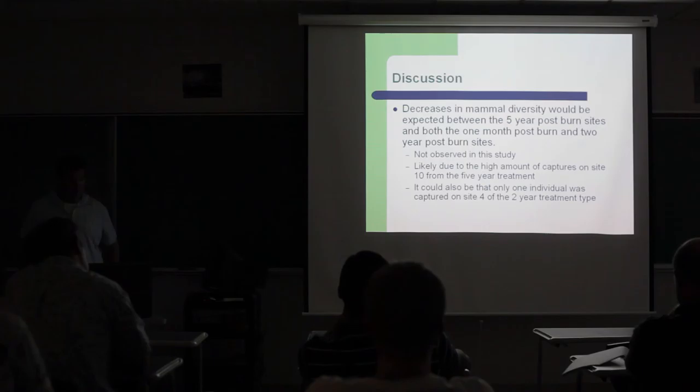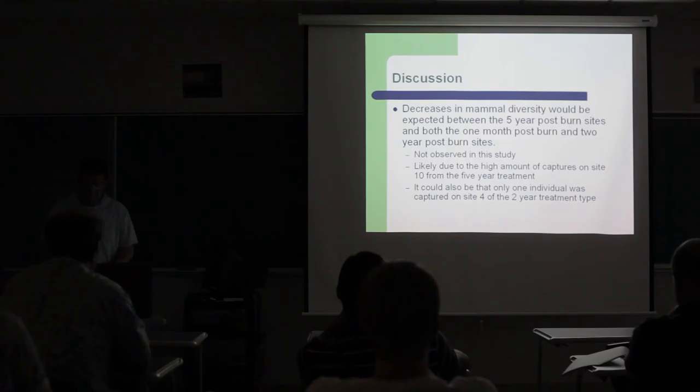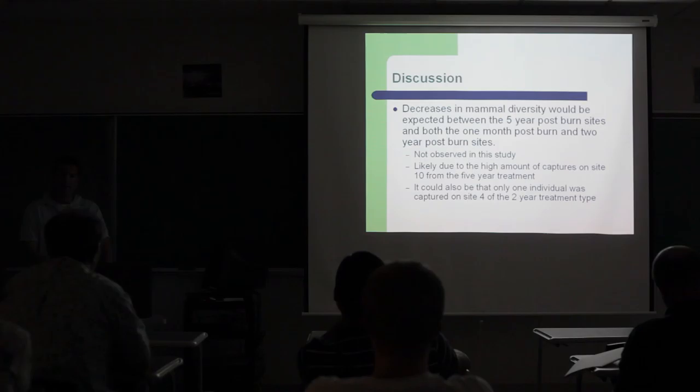Decreases in mammal diversity would be expected between the five-year post-burn sites and both the one-month post-burn and the two-year post-burn sites. This was not observed in this study. In my opinion, I would say it's likely due to the high amount of captures on Site 10 from the five-year treatment. Site 10 was along the creek, had tons of giant cane that formed a real dense thicket along the creek area. Just about all of my mammal captures on that site occurred in that thicket. I had three traps and I caught them in those three traps every time I went out there. Thinking maybe that it provided real good cover for them, possibly.